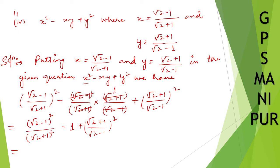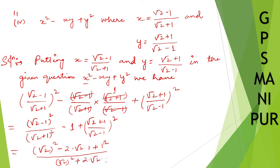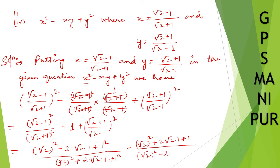We can see (a minus b) squared and (a plus b) squared forms here. Applying the formula: (a minus b) squared is a squared minus 2ab plus b squared, divided by (a plus b) squared which is a squared plus 2ab plus b squared. Plus (a plus b) squared divided by (a minus b) squared, minus 1.